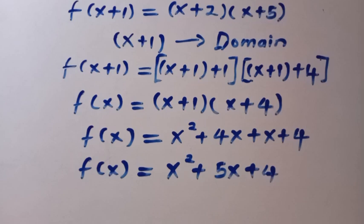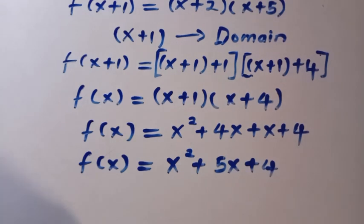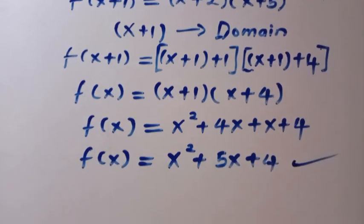And here is the solution to this problem, as the first method. So we get x squared plus 5x plus 4, for f of x only. Then, for the second method,